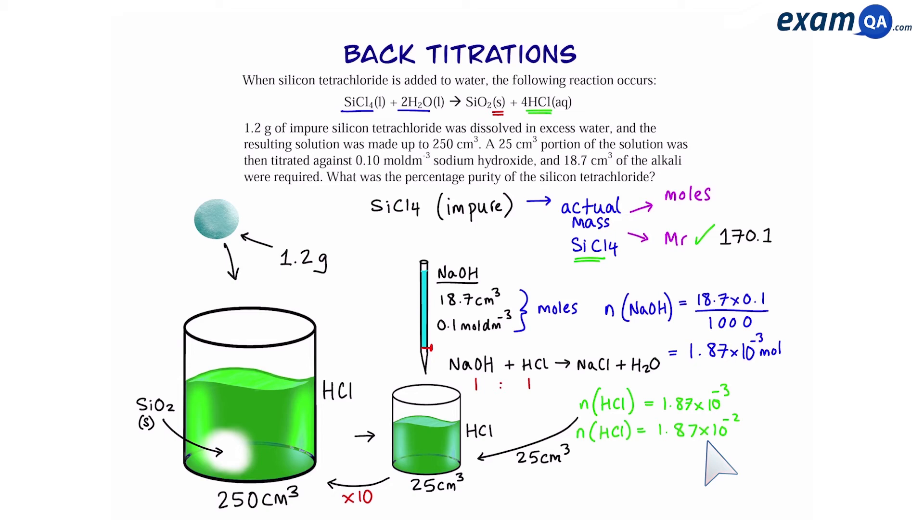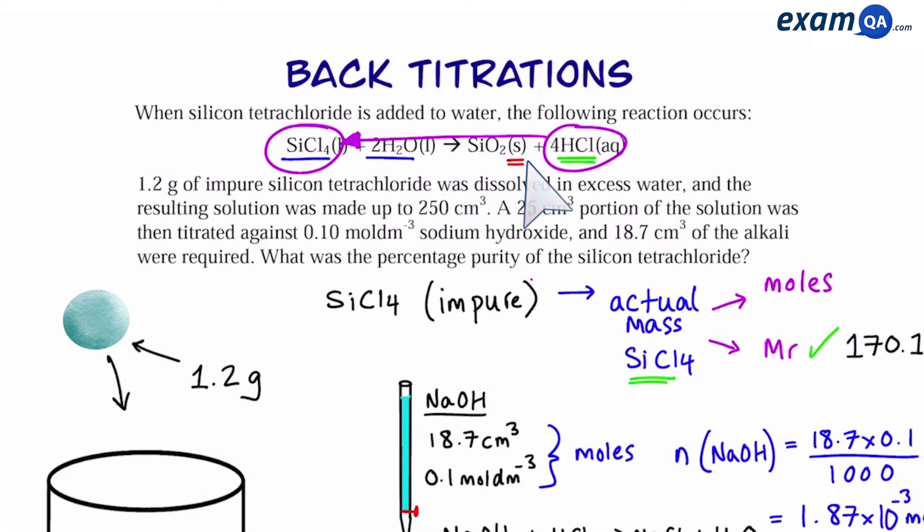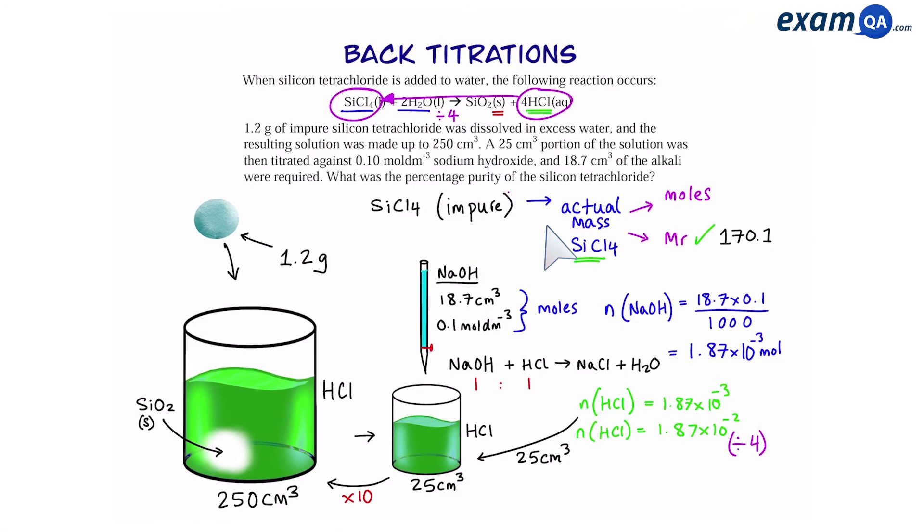Now that we know the moles of hydrochloric acid, we can use the equation above to work at the moles of silicon tetrachloride. Since it's a 4 to 1 ratio, all we have to do is divide it by 4. So dividing by 4 gives us the following. Now we know the moles of silicon tetrachloride. So we can times moles with MR to work out mass and that gives us 0.79 grams. So that means in that 1.2 gram sample, there was only actually 0.79 grams of silicon tetrachloride.